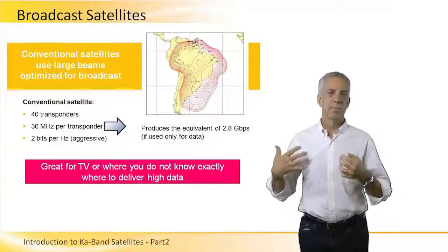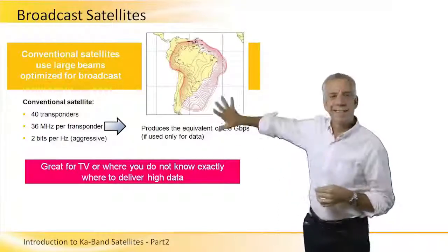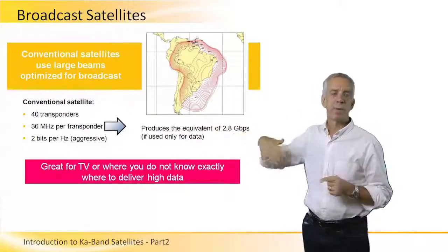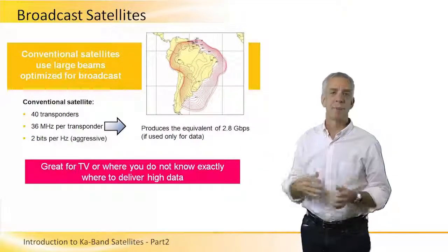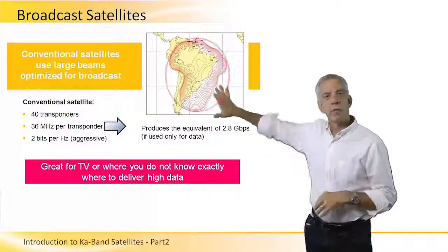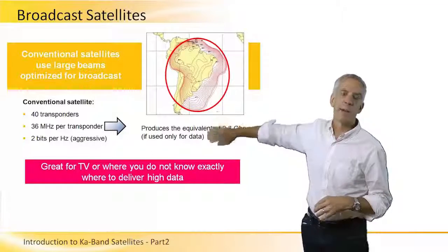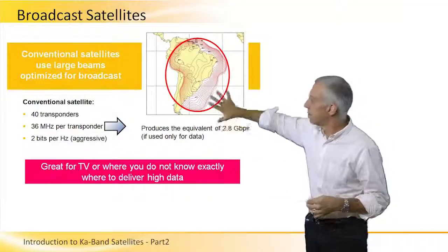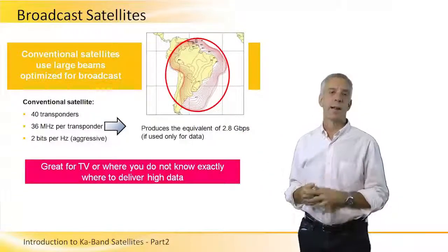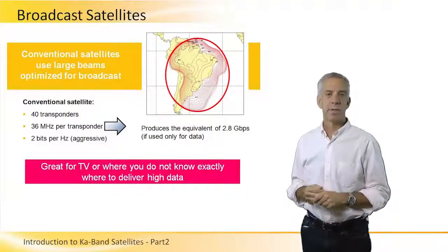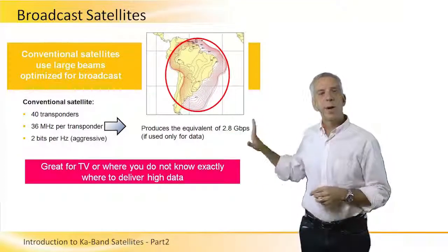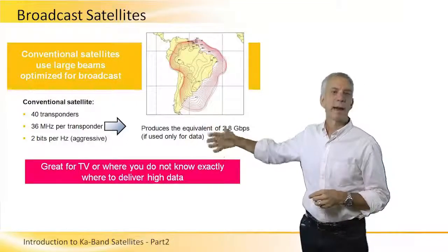Conventional satellites are designed for broadcast. In conventional satellite terminology, we talk about transponders. A conventional transponder covers a large geographic area — for example, one focused on Brazil, or CONUS satellites covering the continental U.S. If we were to run data over these kinds of satellites, we get a lot less capacity.